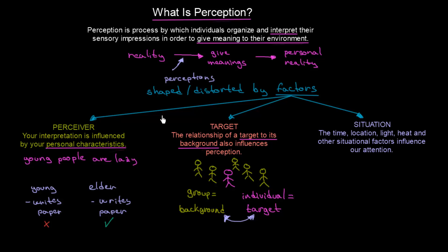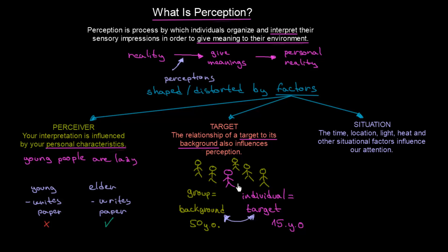Let's keep to our example. This individual is 15 years old, and these other persons are around 50 years old. Our perceptions are going to be influenced by the fact that there is a young person standing in a group of elder persons — we'll be asking ourselves, well, something seems different here. We will perceive this person differently than if there were a 15-year-old standing among other 15-year-olds. You always have to think about the relationship between the target and its background — the context.